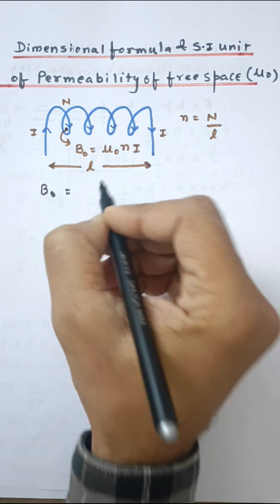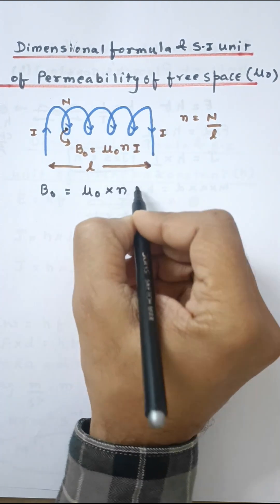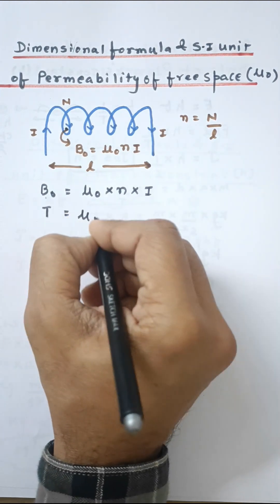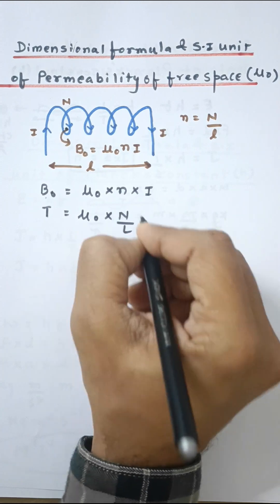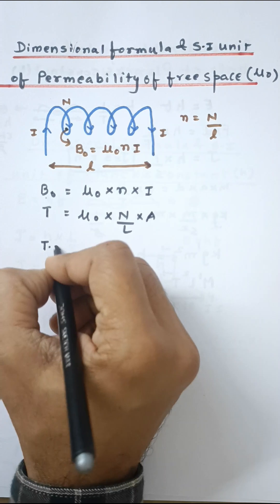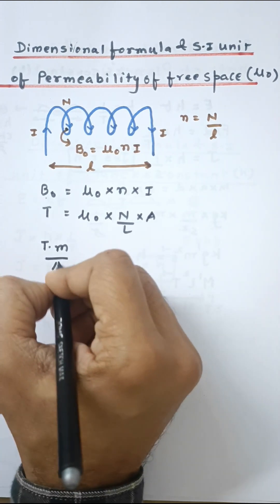B0 is equal to μ0 times n times I. Now, from here I can write down Tesla equals μ0. Now this is n by L multiplied by ampere. This is meter. So Tesla meter goes up and then the ampere goes down. That is the SI unit of μ0.